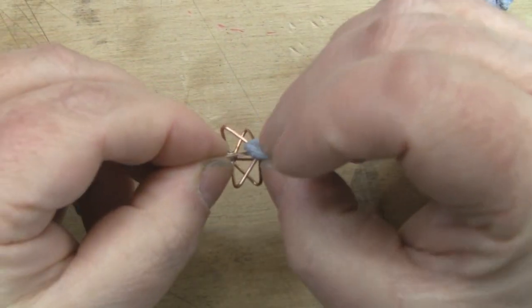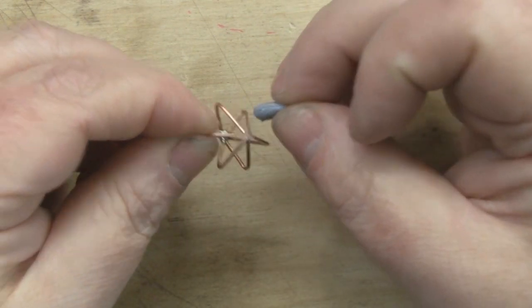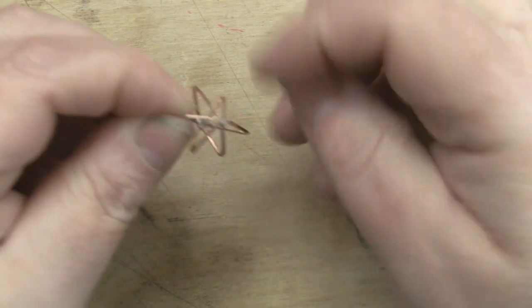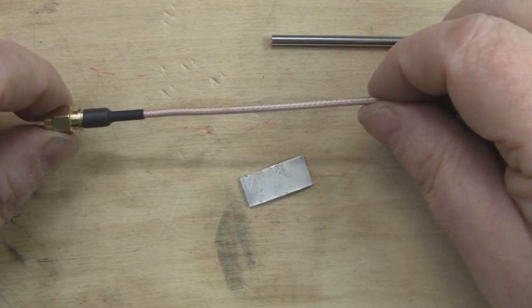Any little bits of blue tack left on these legs, just get another piece of blue tack and gently remove it, trying not to bend the elements themselves. I'm now going to move on to the coax for this antenna.